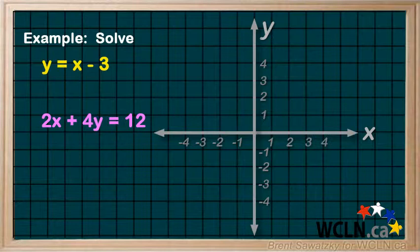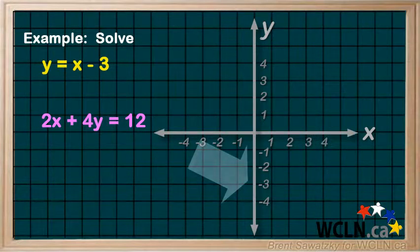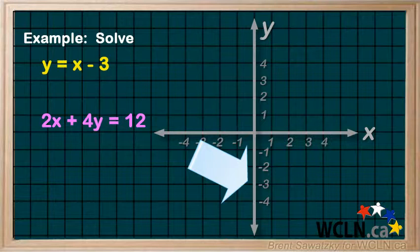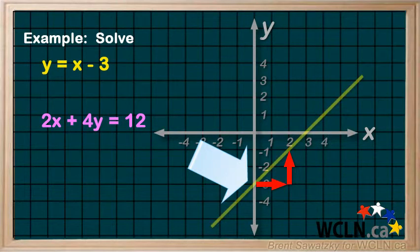The first one is already in our y equals mx plus b format, which is awesome. So, we can just plot it right away. The y-intercept of negative 3, and a slope of 1 over 1. And here we go.